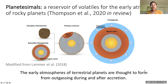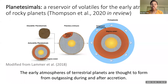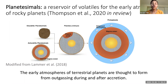Meteorites are the only samples available to directly test in the lab how the initial ingredients that went into building a planet influence the composition of its atmosphere. This is especially relevant for characterizing terrestrial exoplanets because telescopic analysis of exoplanet atmospheres is the main way to understand the bulk composition of these planets and their potential habitability.